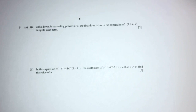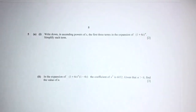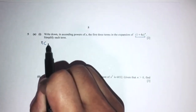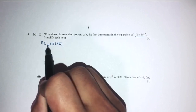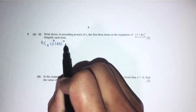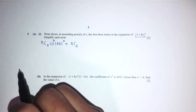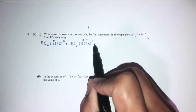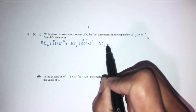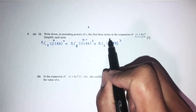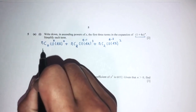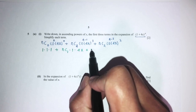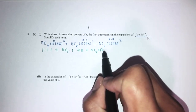Let's move on to question 5. We have to write, in ascending powers of x, the first three terms in the binomial expansion of (1 plus 4x) to the power n. Using the binomial theorem: 1 plus n-choose-1 times 4x plus n-choose-2 times (4x) squared. Simplifying using n-choose-1 equals n, this gives 1 plus 4nx plus 8n(n minus 1)x squared.